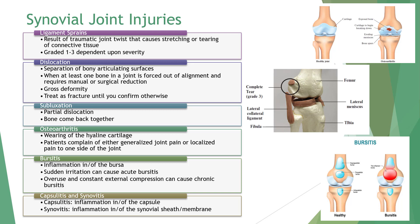Ligament sprains are often the result of traumatic joint twists that cause stretching or tearing of connective tissue, graded by severity. A grade 1 results in some pain, minimal loss of function, no abnormal movement, and mild point tenderness. A grade 2 sprain results in pain, moderate loss of function, swelling, and instability with tearing and separation of ligament fibers. A grade 3 sprain is extremely painful, resulting in loss of function, severe instability and swelling, and may also represent a subluxation.